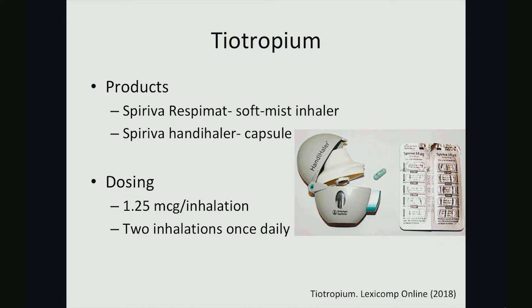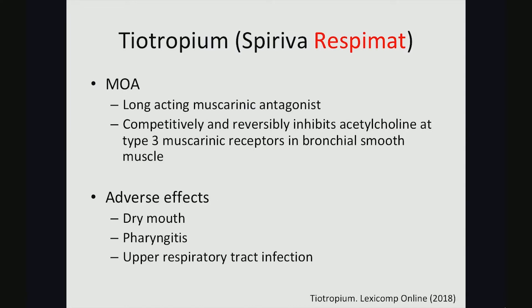The Respimat comes as a 1.25 microgram per inhalation formulation, and the dose is typically two inhalations once daily. The mechanism of action: tiotropium is a long-acting muscarinic antagonist that competitively and reversibly inhibits acetylcholine at the type 3 muscarinic receptors in bronchial smooth muscle, which in turn allows for smooth muscle relaxation and ultimately bronchodilation.